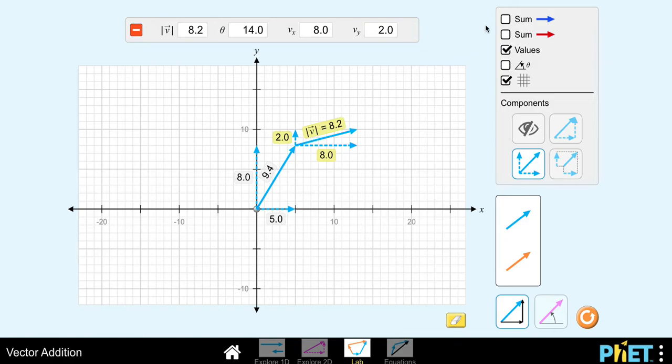So let's check our work. If I check up and go to sum right here, what we see is exactly that. So 5 plus 8 is 13, that's the x component of the resultant. 8 and 2 is 10, which is the y component of the resultant.